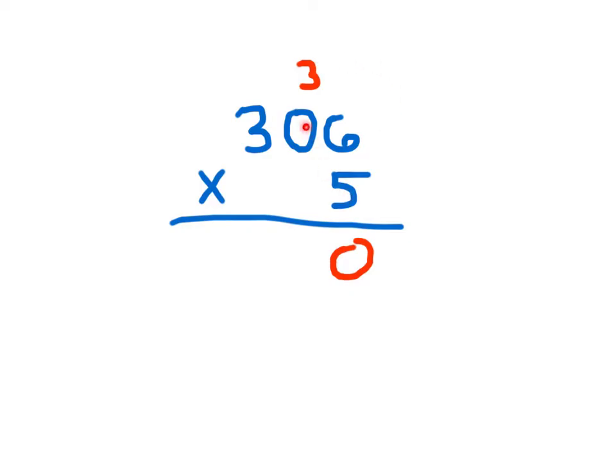Wherever place that might be, and then remember to add in the regroup if you need to. So, in this case, 5 times 0 is 0, plus 3 is 3, and then 5 times 3 is 15. So, 306 times 5 is 1,530.